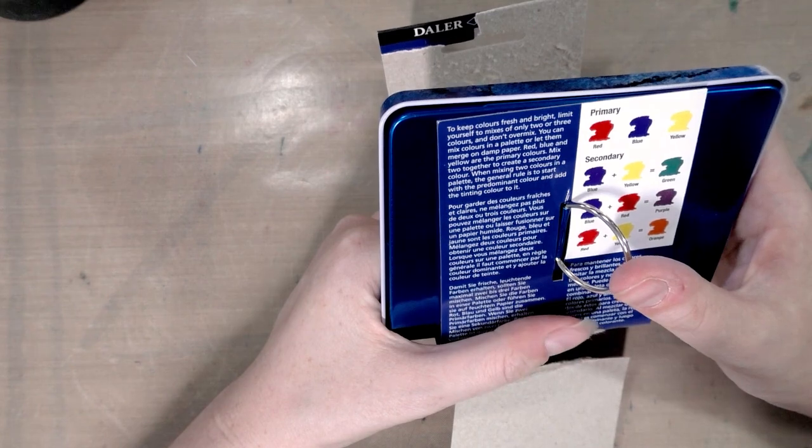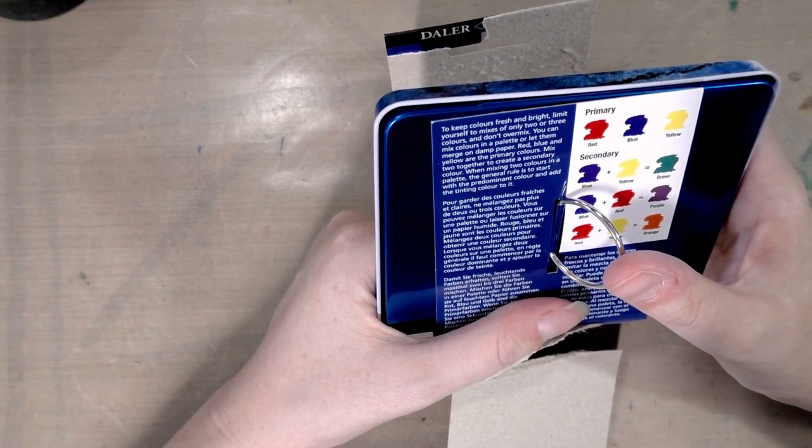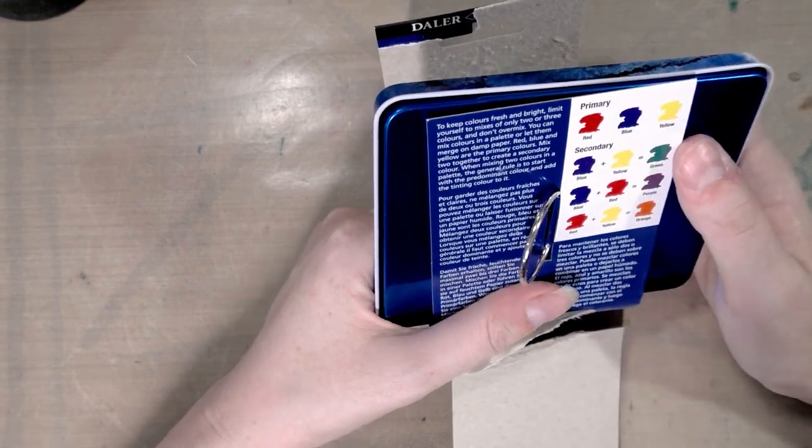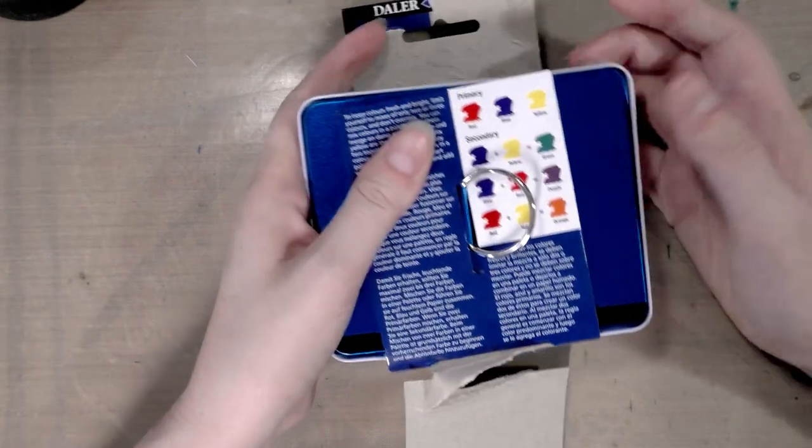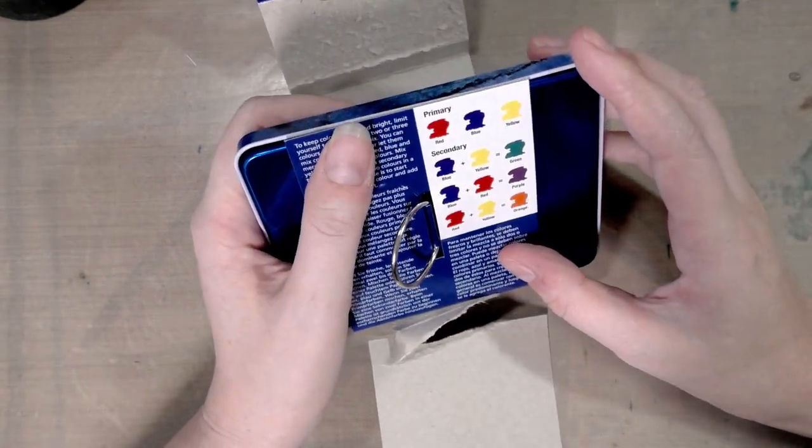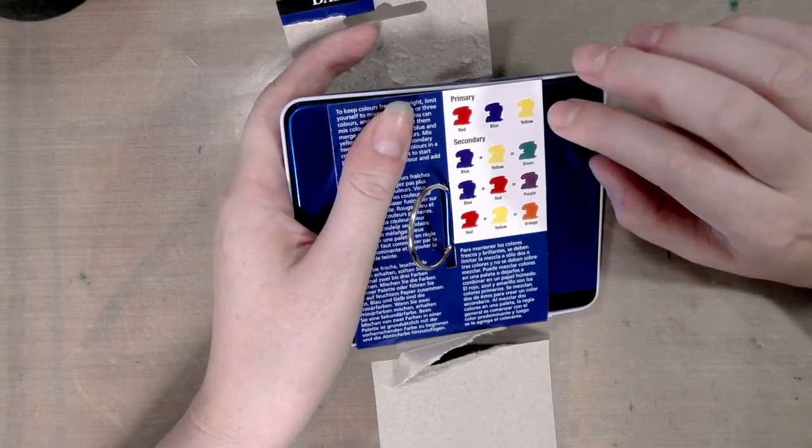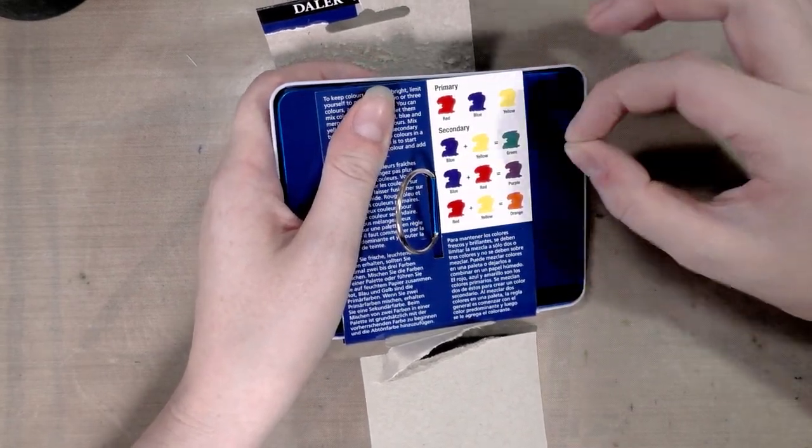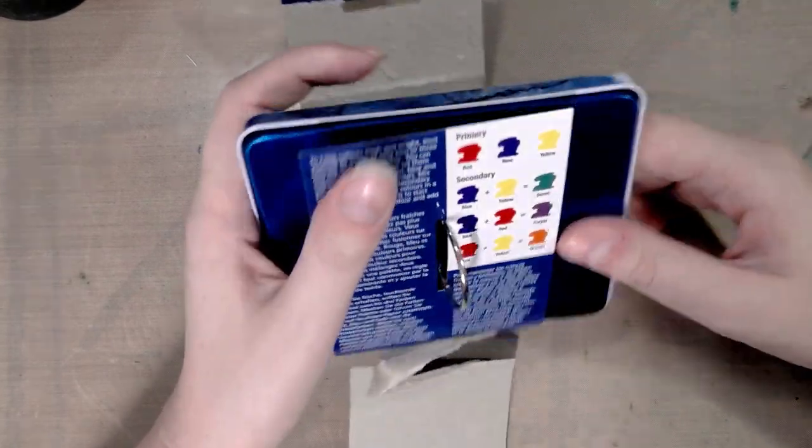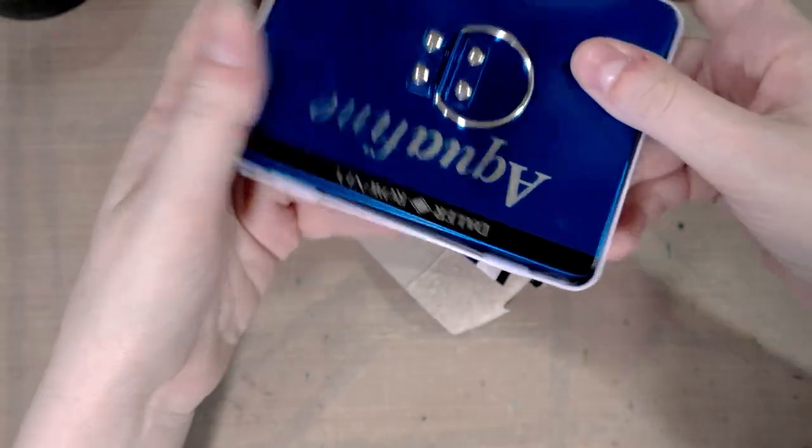When mixing two colors in a palette, the general rule is to start with the predominant color and add the tinting color to it. For example, if you want to make a yellow green, you'd start with a lot of yellow and then slowly add a little bit of blue.